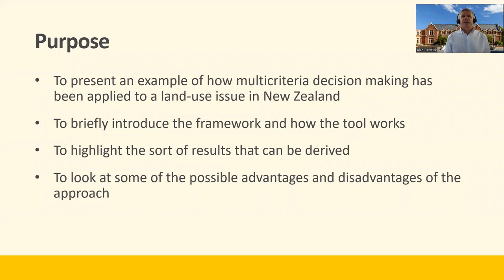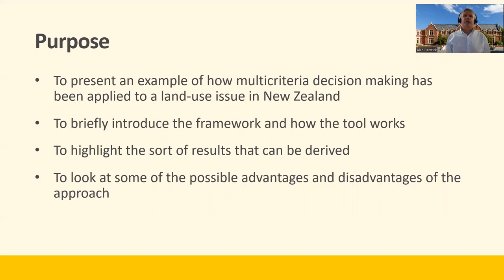We have four aims within this video. We want to show an example of how multi-criteria decision making has been applied to land use in New Zealand. We want to briefly introduce the framework and how the tool works — we will go into detail on the framework in later videos. We want to highlight the sorts of results that can be derived and how it can be used. And finally, we want to look at some potential advantages and disadvantages of the approach.